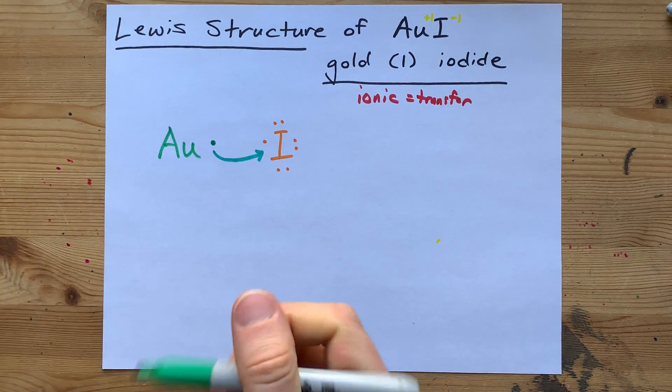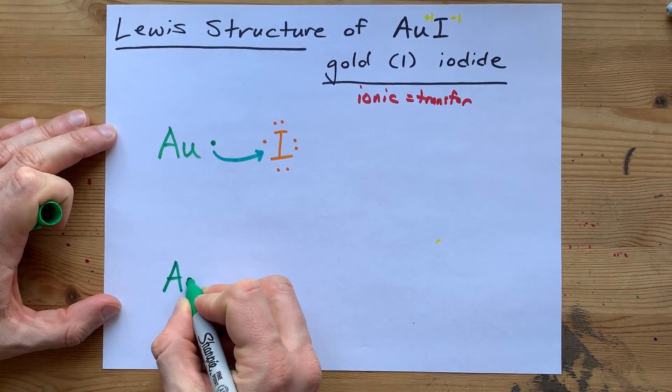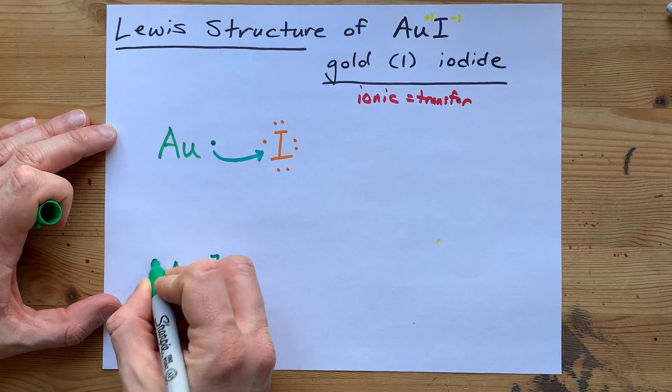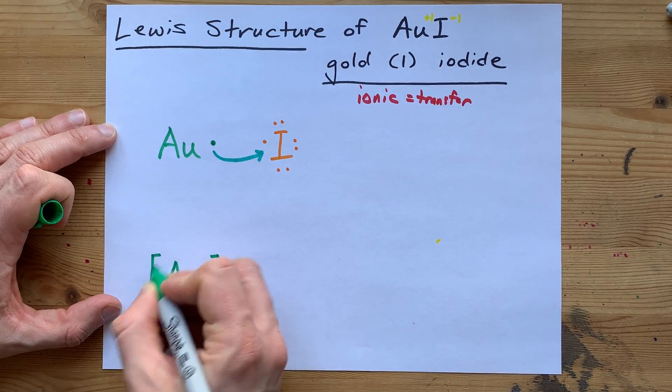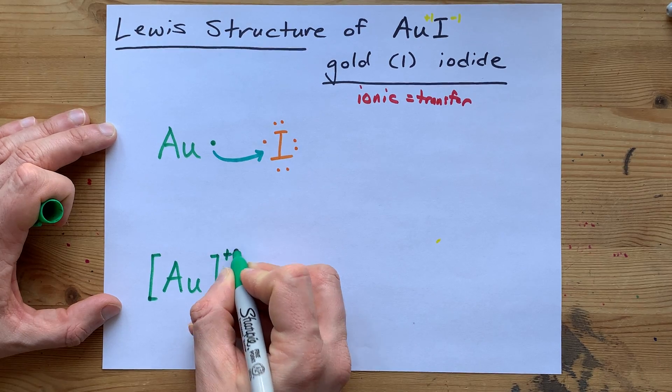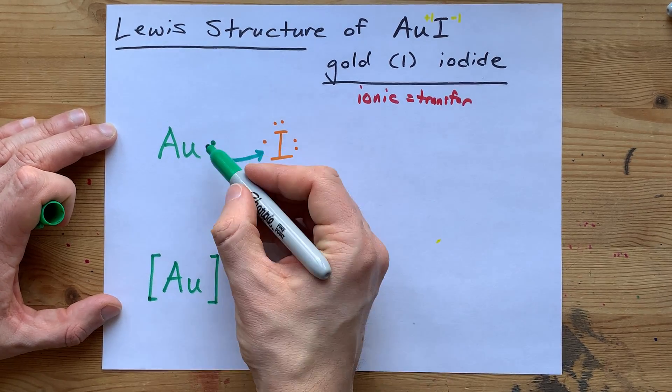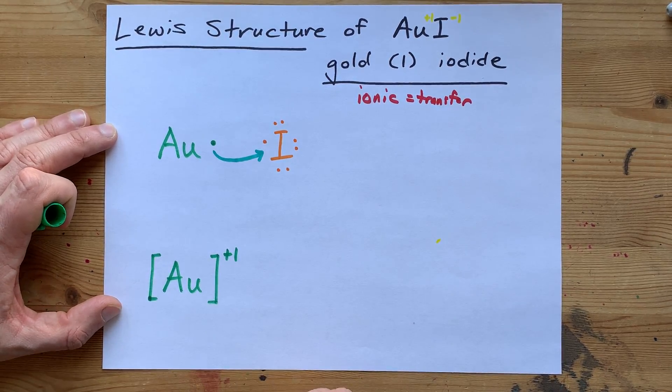So, in the end, we have our gold with no electrons in its outer shell. So we draw it with no dots on it. And a plus 1 charge because it lost one negatively charged electron.